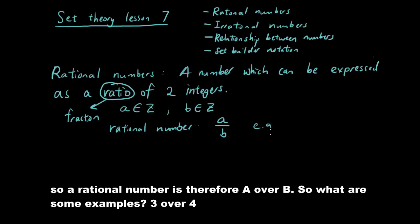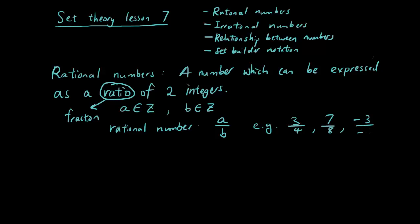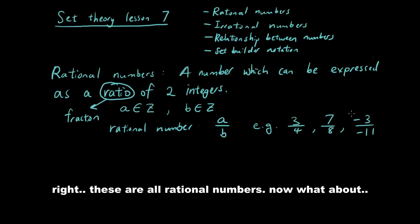So what are some examples? 3 over 4 is a rational number, 7 over 8 for example — any two integers you can think of. Negative 3 over negative 11 — these are all rational numbers.